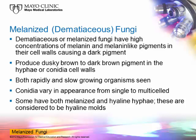Sometimes the pigmentation is very slight and hard to see. Most of the time it's a dusky brown, dark brown, or even black in the hyphae and possibly in the conidial cell walls. There are two distinct groups: slow-growing and rapidly-growing. Conidia vary in appearance from single cell to multi-cell. Some organisms may have both melanized and hyaline hyphae in the same mount, and those are considered hyaline molds rather than pigmented molds.